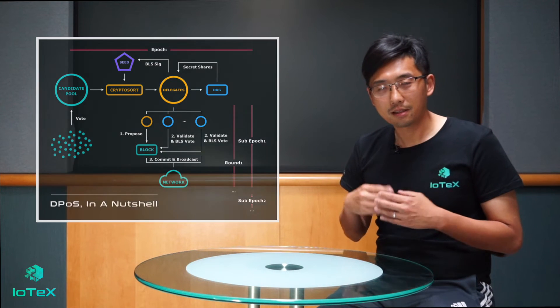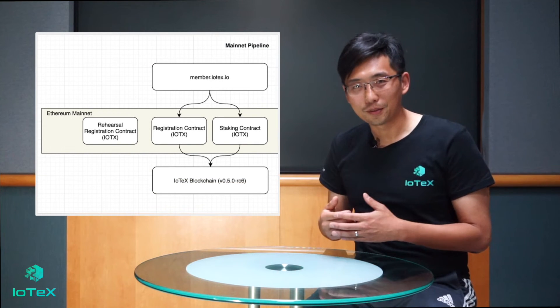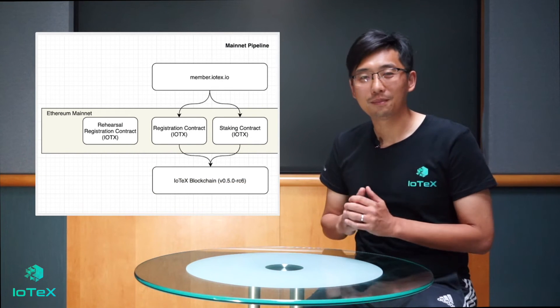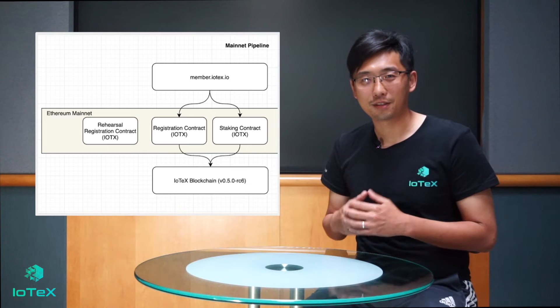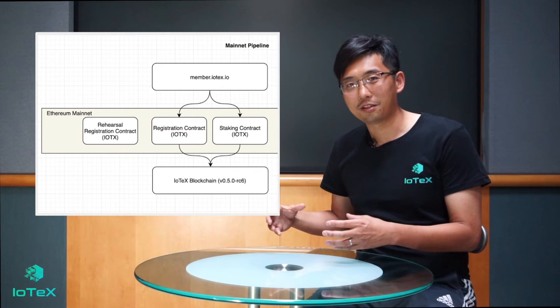This consensus provides very high throughput. As we tested on our testnet, it can reach almost 2,000 finalized TPS. Second is cross-network governance. We introduce a new paradigm for decentralized governance, such that the governance itself — for example, staking and voting — happens on a more matured public blockchain, for example Ethereum, while the results get supplied to IoTeX's blockchain.